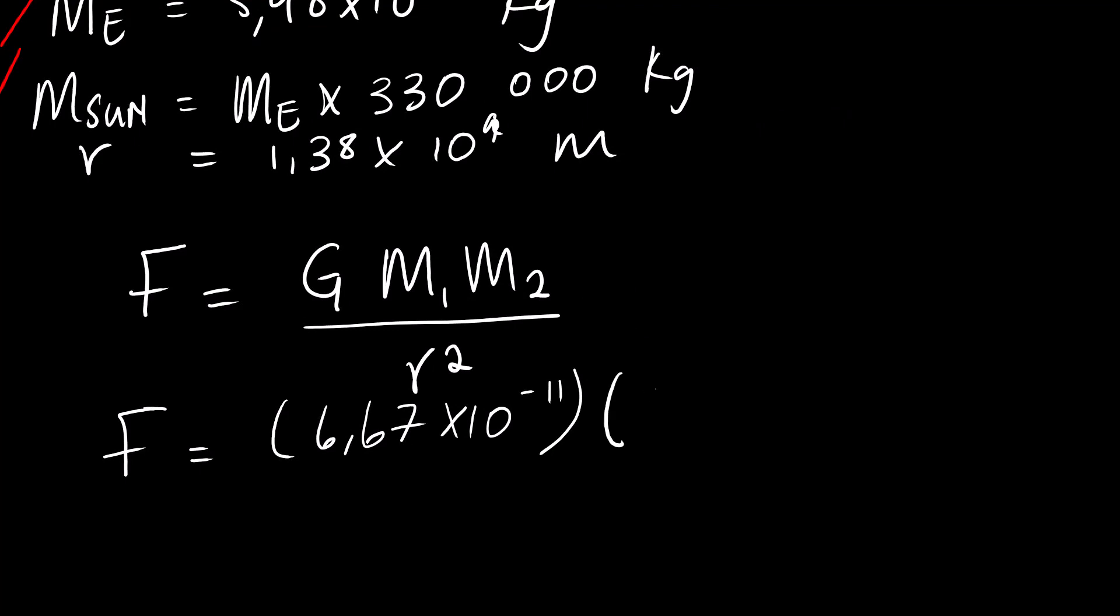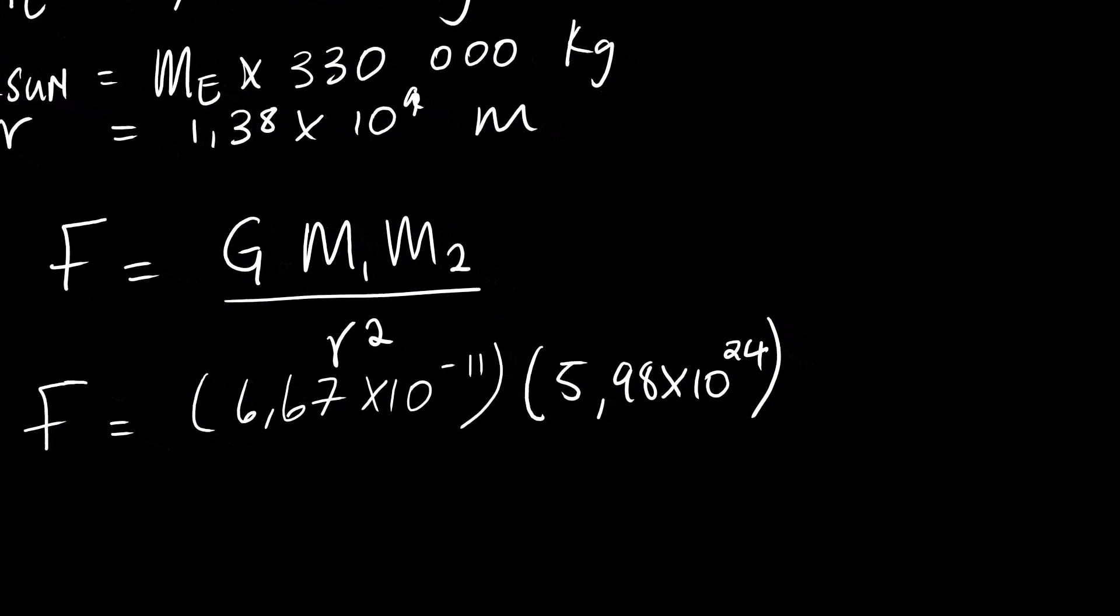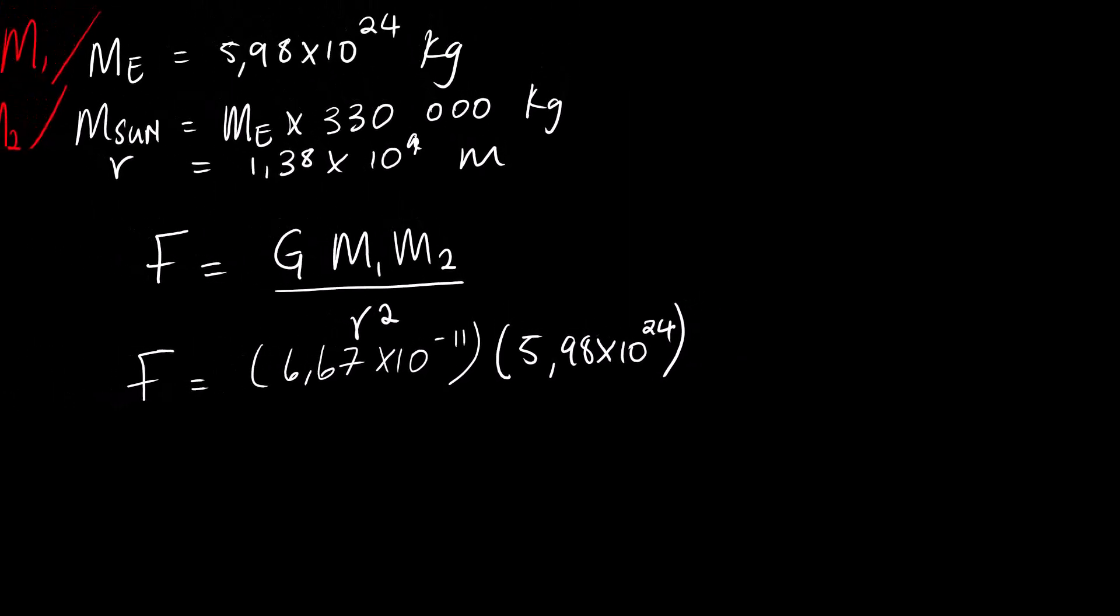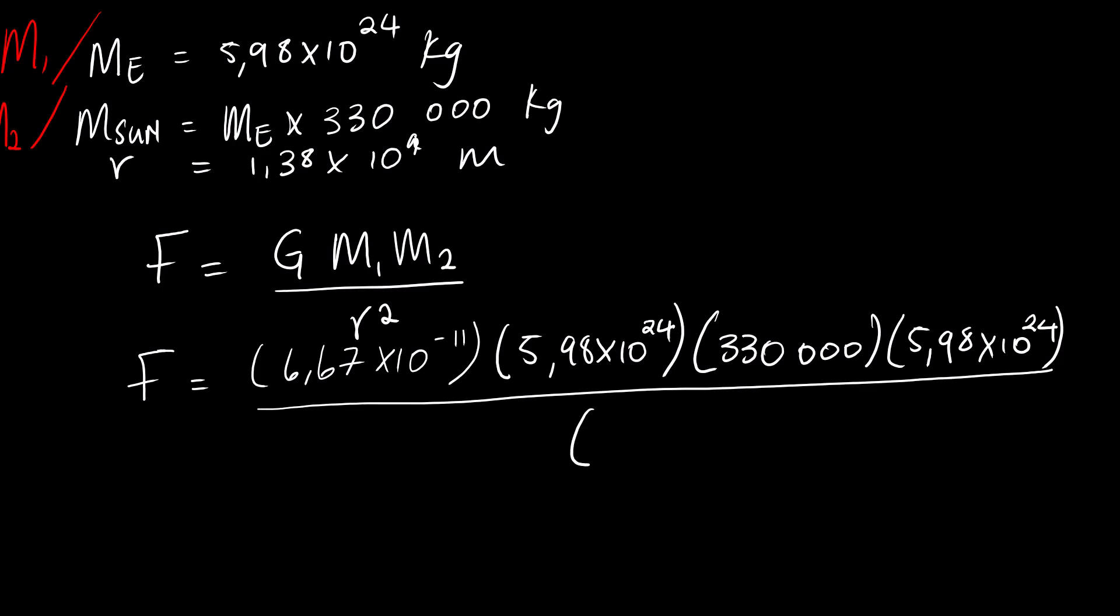And then M1, M1 is the Earth, which is 5.98 times 10 to the power of 24. And then for the Sun. For the Sun, we can write it like this. 380,000 multiplied by 5.98 times 10 to the power of 24. The distance between them is 1.38 times 10 to the power of 11.